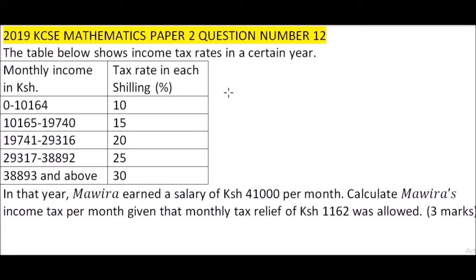Since we have been given the tax rate table, we take the first bracket: 10,164 multiplied by 10 percent, which is the same as 0.1. This gives you 1,016.40 shillings. That is the first bracket. Then from there we subtract — that is 19,740...